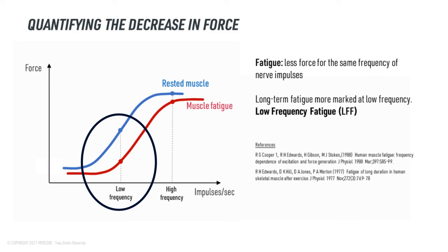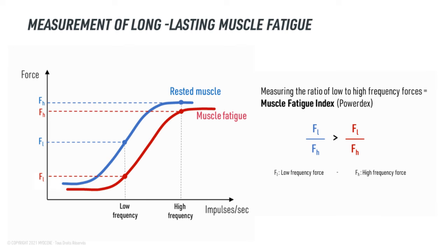That's why this is commonly referred to as low-frequency fatigue. The difference in force output between the rested and fatigued muscle is greater at the lower frequencies. It's this low-frequency fatigue that myosin is objectively measuring and leveraging to understand muscle fatigue. Its technology measures force output at these fixed frequencies to establish a ratio — a muscle fatigue index they refer to as their power deck score, which measures the ratio of low-to-high-frequency forces.